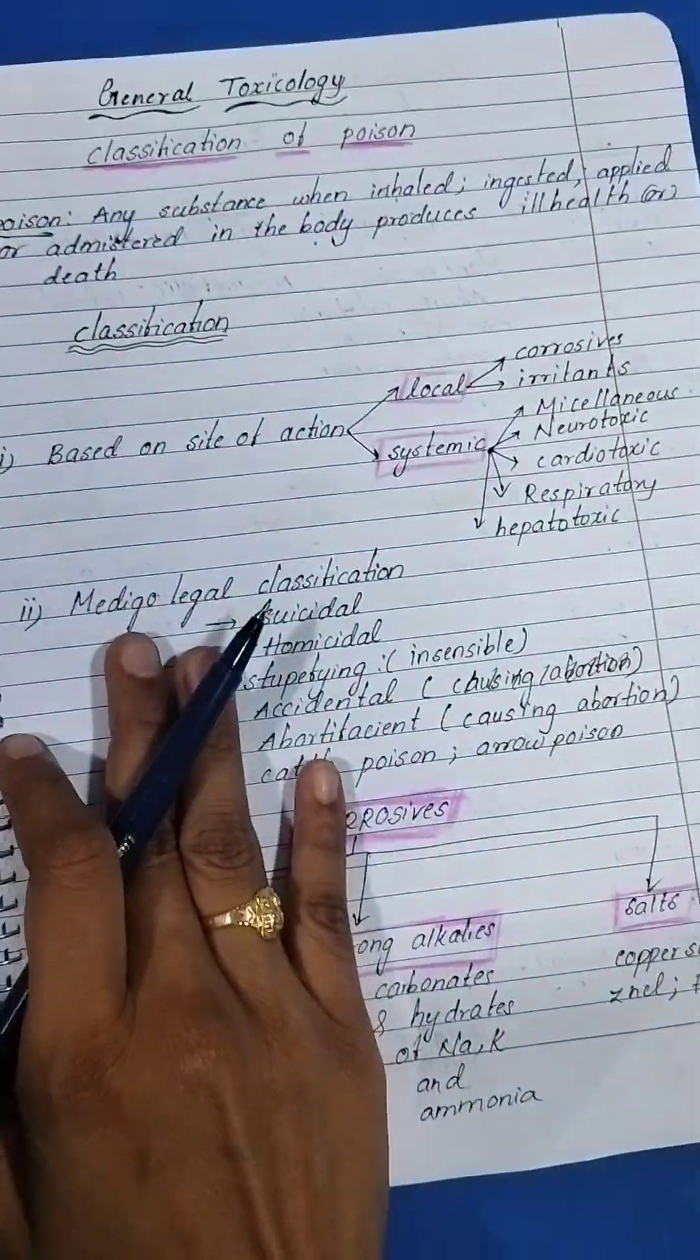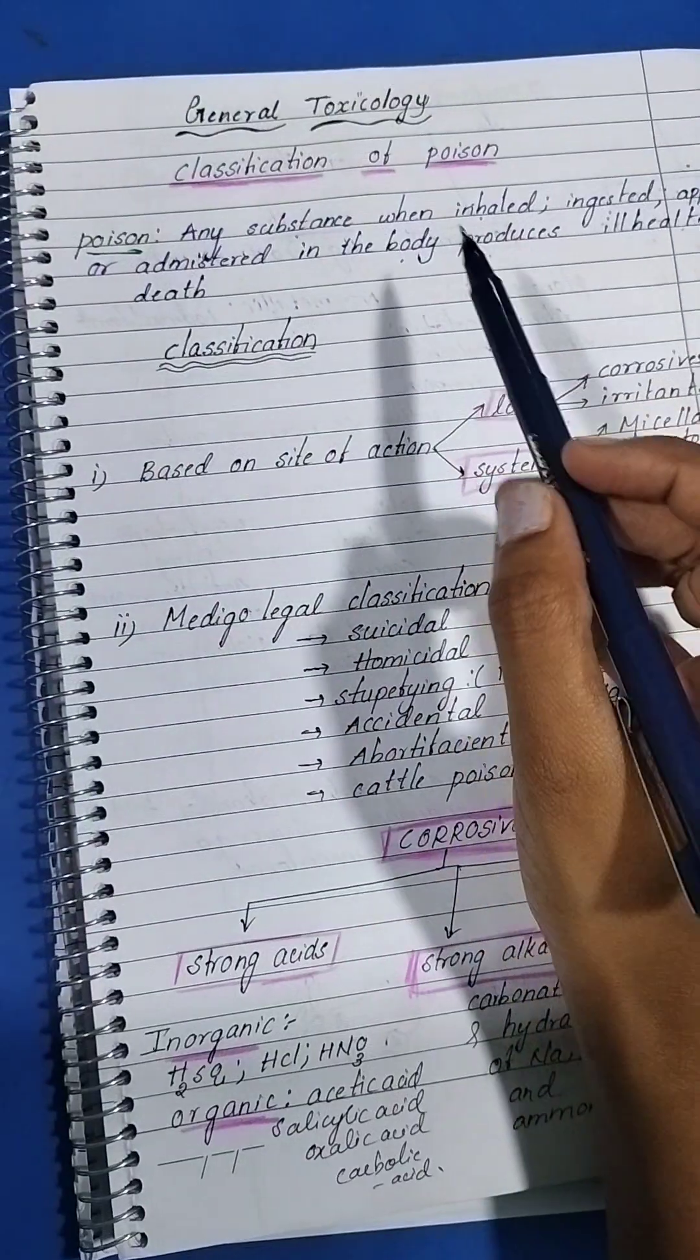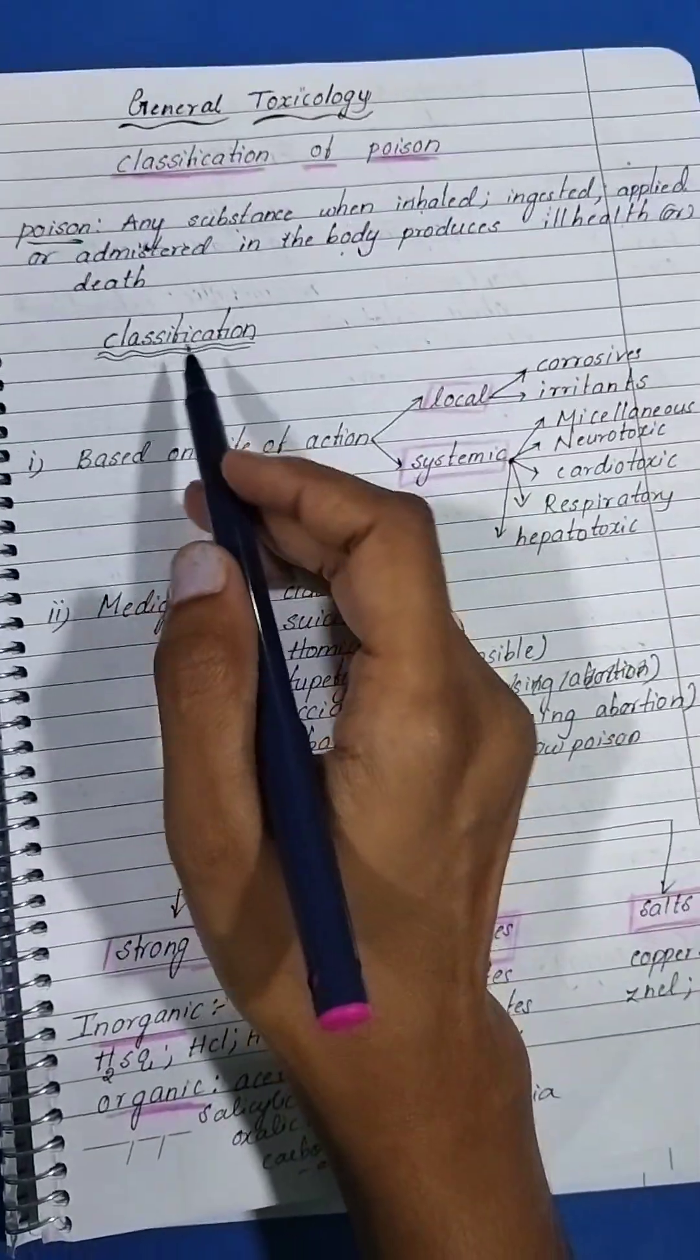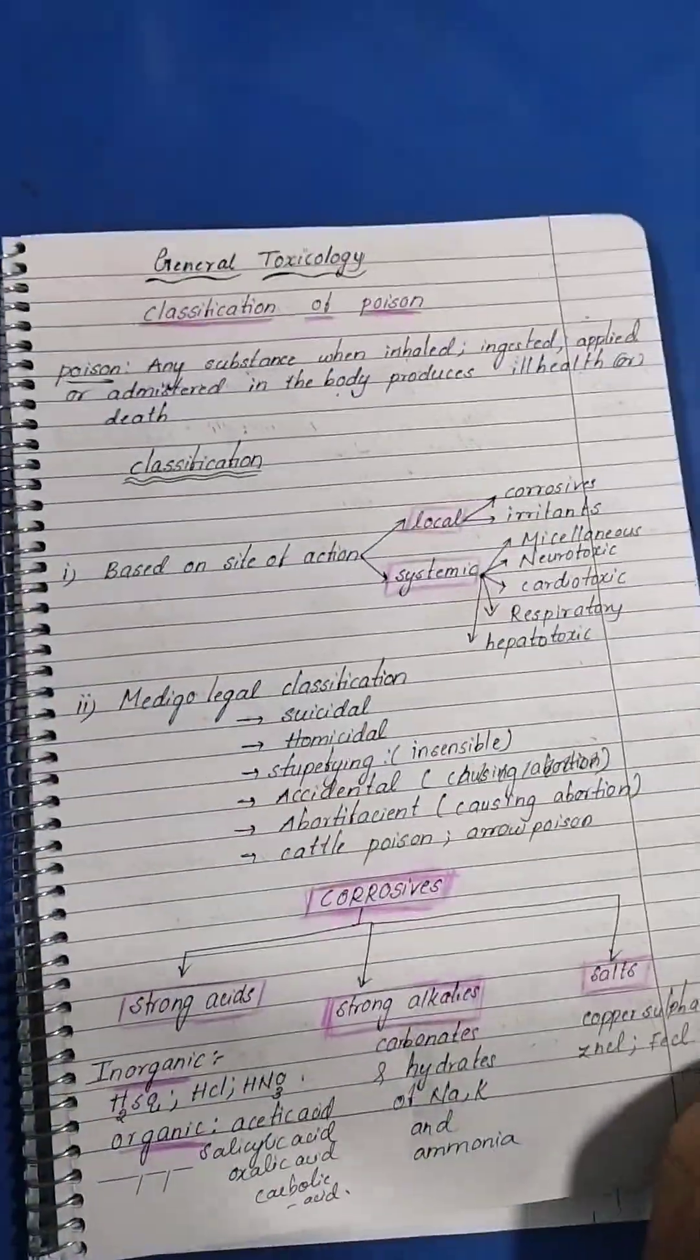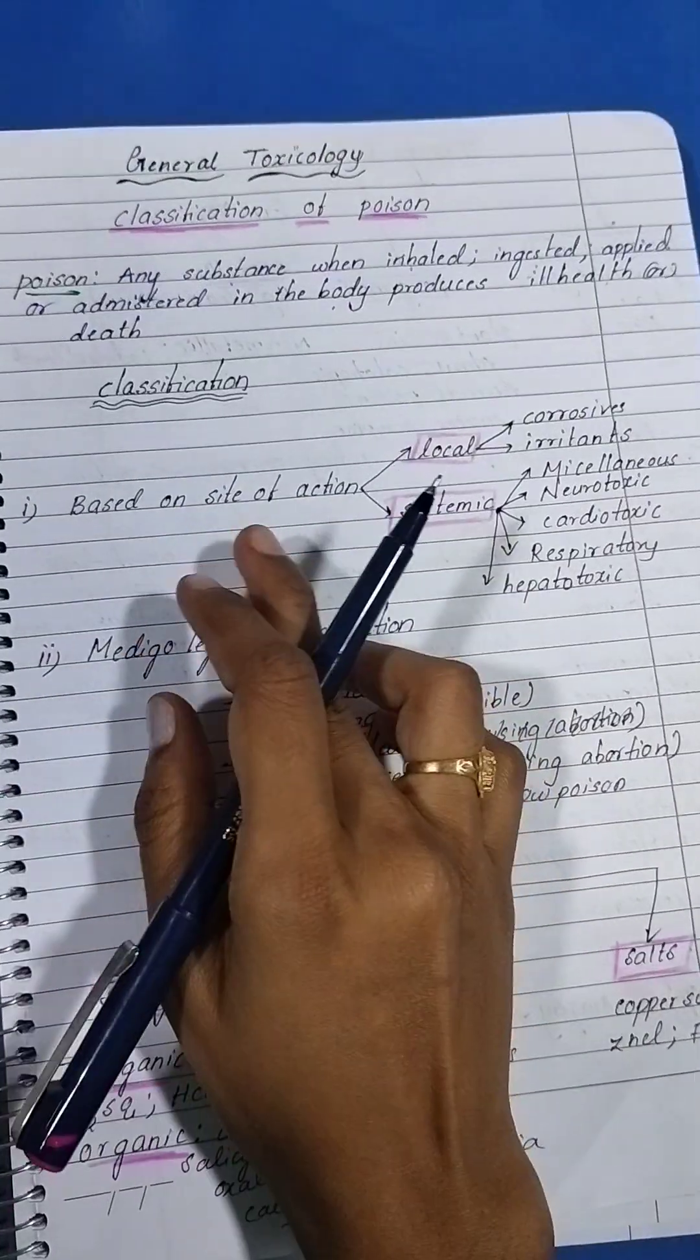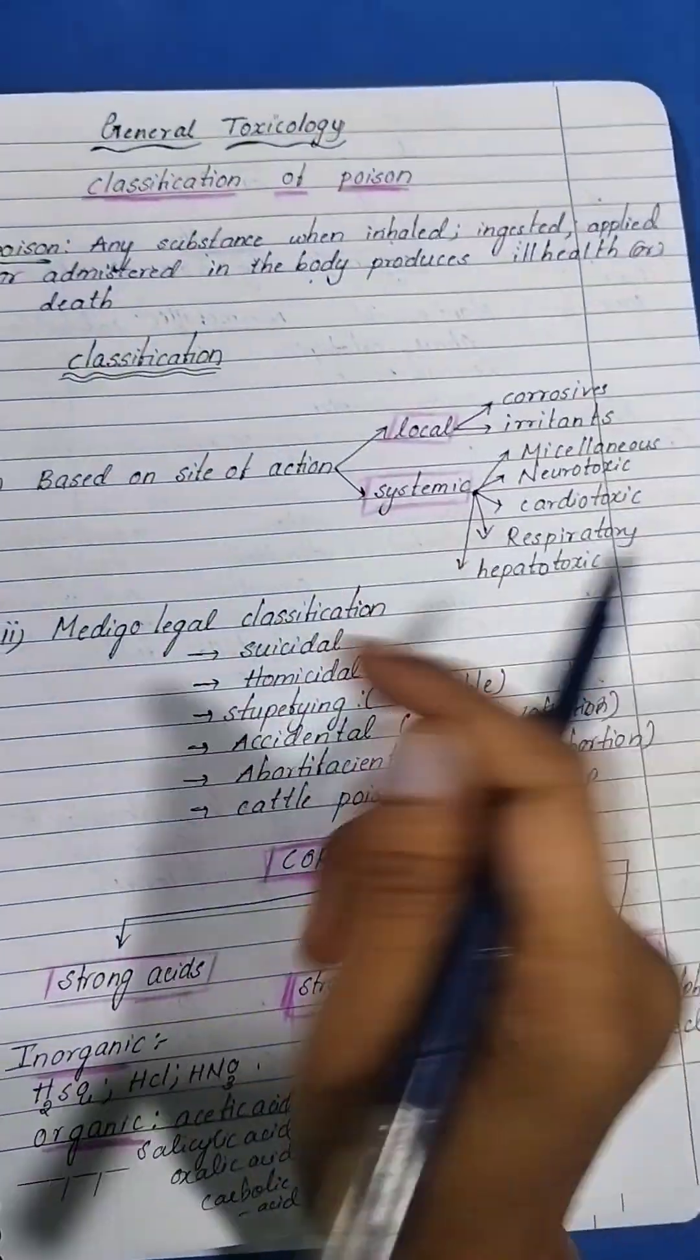Whenever you get a question on classification of poisons, first you have to write the definition and the classification. Classification is done based on the site of action and based on medical-legal classification.